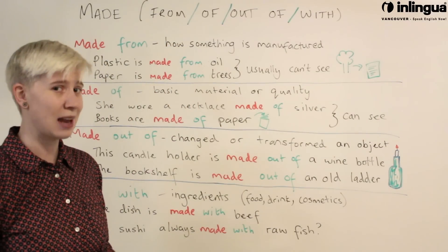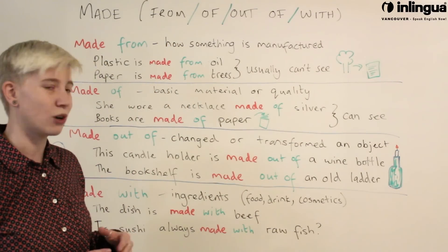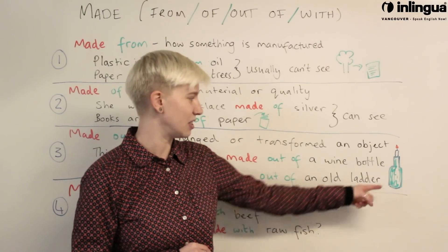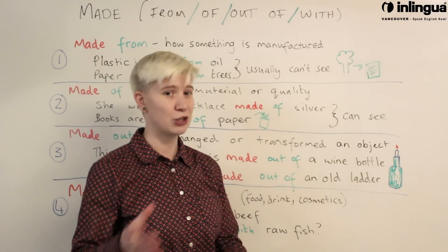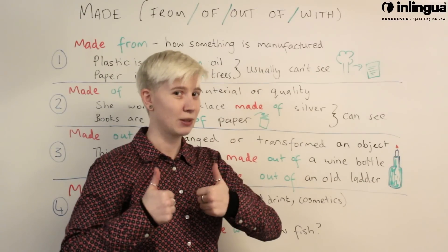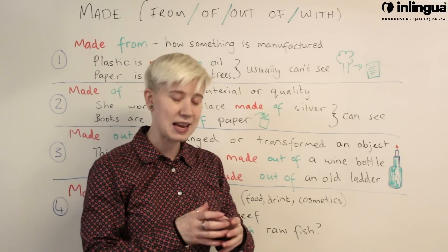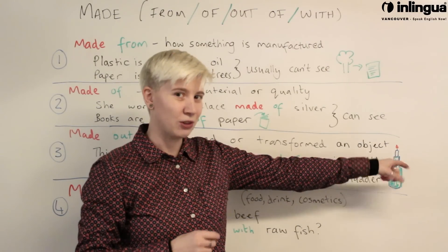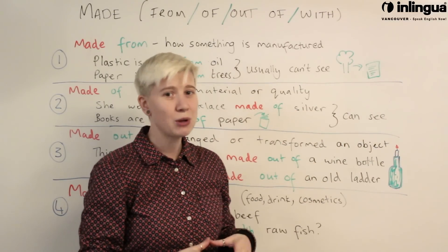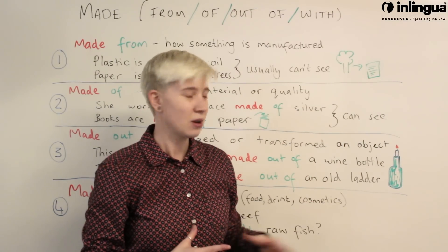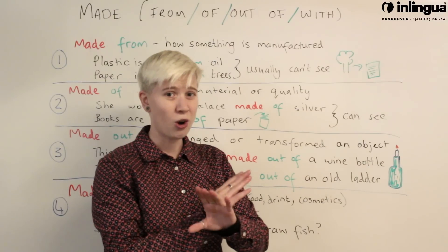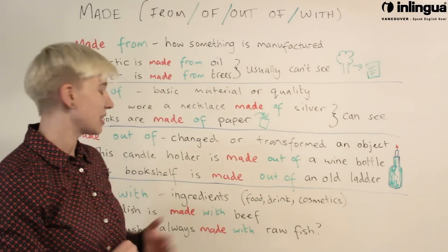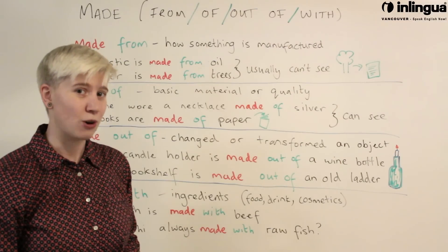My first example: 'This candle holder is made out of a wine bottle.' To help you understand, I've drawn a small picture. You can see the wine bottle — its original purpose was holding wine. Now I have taken that wine bottle, put a candle in it, and now it is a beautiful decoration for my house. The wine bottle is not holding wine anymore; now it is a candle holder. This candle holder is made out of a wine bottle.